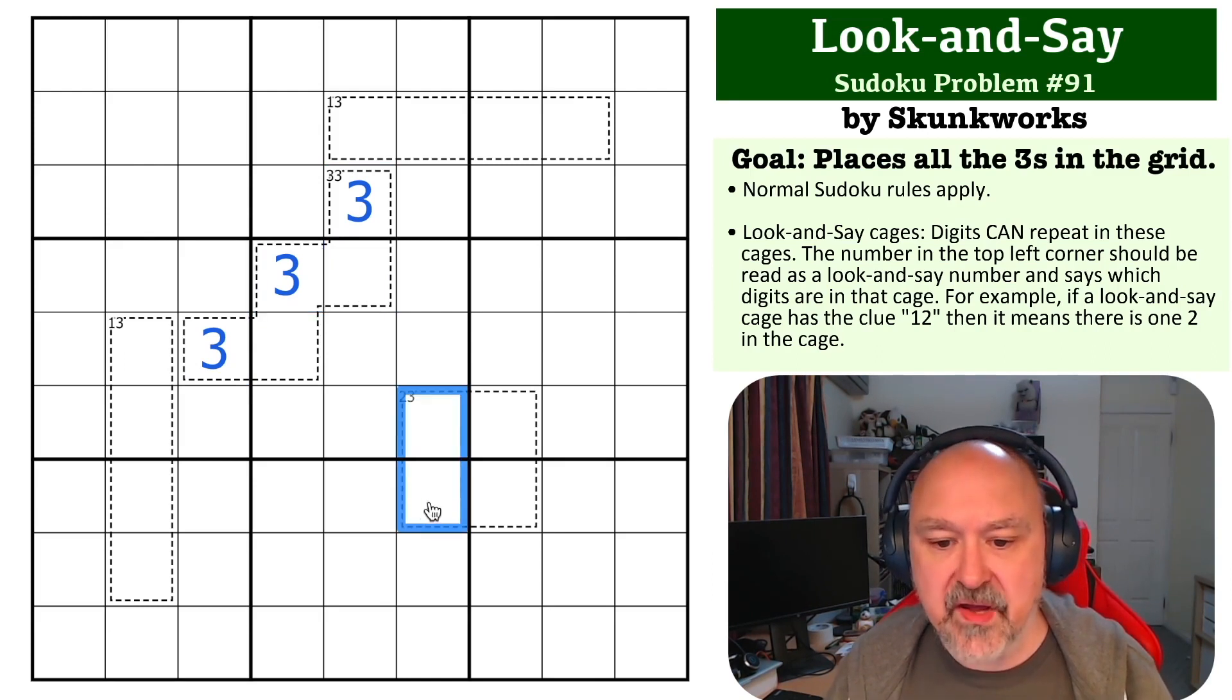We can now look at this 2-3 box. So we've got to put two 3s in here, but we cannot put a 3 into this cell. So if we were to put a 3 here, and we can't put a 3 here, we would have nowhere to put a second 3. So these become the two 3s.